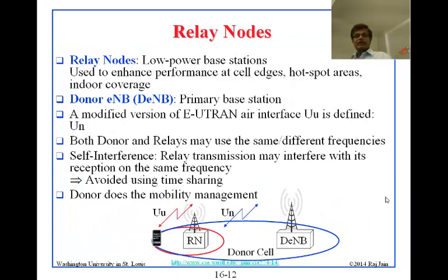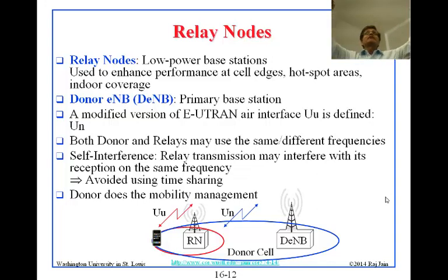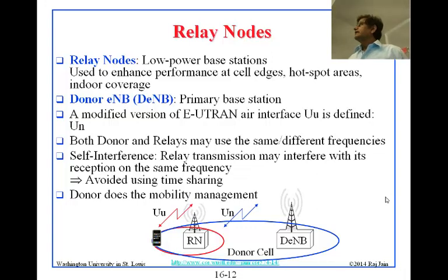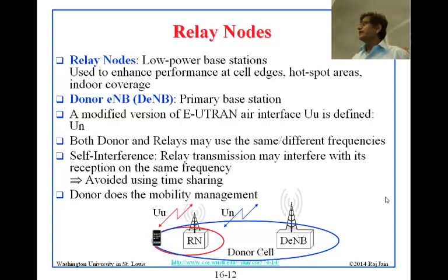Relay nodes address situations where the main tower cannot reach — for example, if you are in a city between two big buildings. A block away at a cross-section, you could put a relay node that can see the main tower. Relay nodes are small towers that run on the same frequency. This is called the donor cell, which is the main tower, and this is the relay node, which covers a certain area as shown.